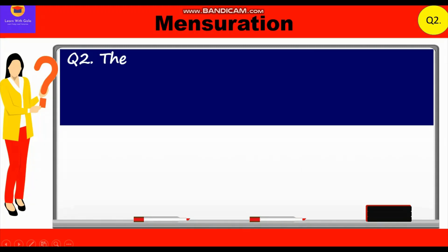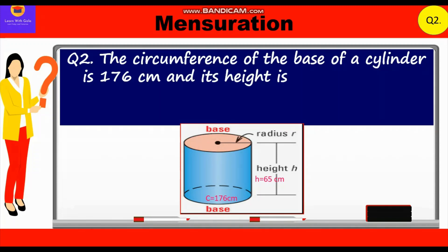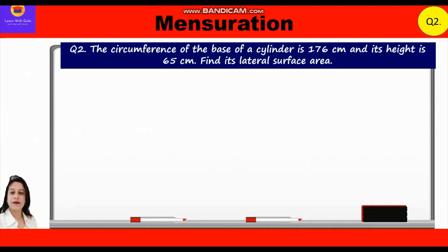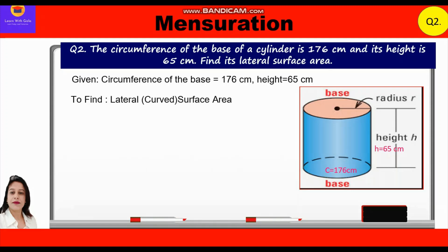Now let's move to Question 2. The circumference of the base of a cylinder is 176 cm and its height is 65 cm. Find its lateral surface area. Given: circumference of the base is 176 cm, height is 65 cm, and we have to find the lateral surface area, which is also called curved surface area.